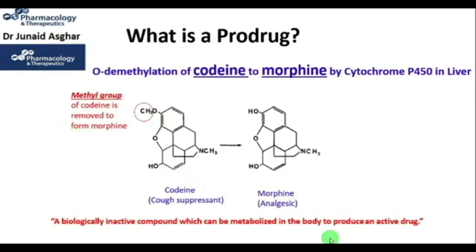Some drugs naturally happen to be pro-drugs, whereas some pro-drugs are designed deliberately to improve bioavailability — for example, if the drug itself is poorly absorbed from the GIT. Pro-drugs are sometimes designed to reduce the toxicity of the parent drug or to target a drug to specific tissues of the body.